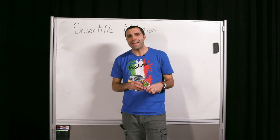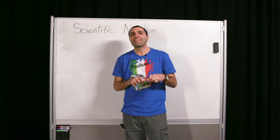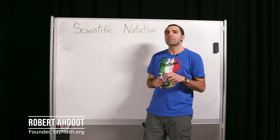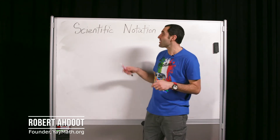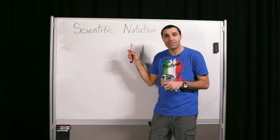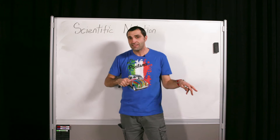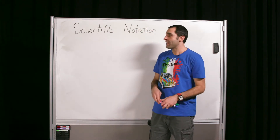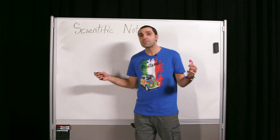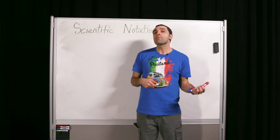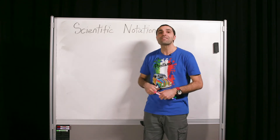Welcome back. This is YayMath.org's presentation of Yay Math in Studio. I'm Robert Adut, founder of yaymath.org, and today we're going to be talking about scientific notation, which is a very cool crossover topic from both math and science. It's used a lot in chemistry, and it's a really valuable tool to help us express really large numbers and really small numbers. We're going to use rules of exponents to help us do that.